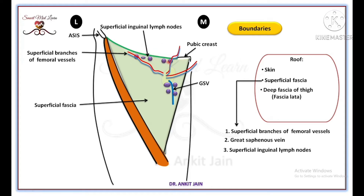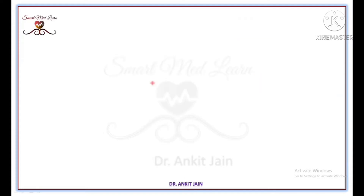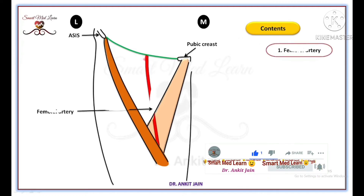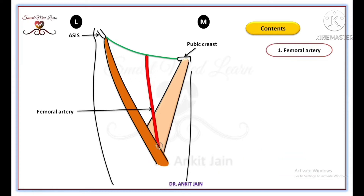The great saphenous vein drains into the femoral vein. Some superficial inguinal lymph nodes are also present in the superficial fascia overlying the roof of the femoral triangle. Now we discuss the contents of the femoral triangle. The femoral artery runs downward from the mid inguinal point to the apex of the femoral triangle.